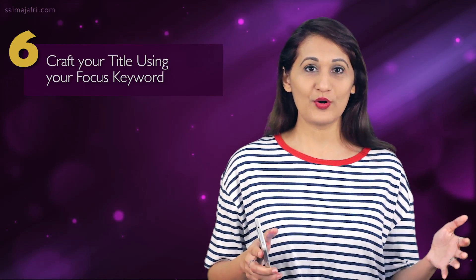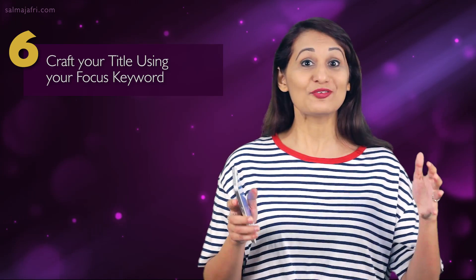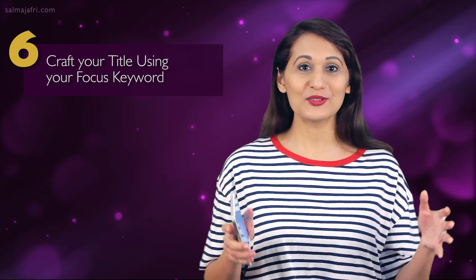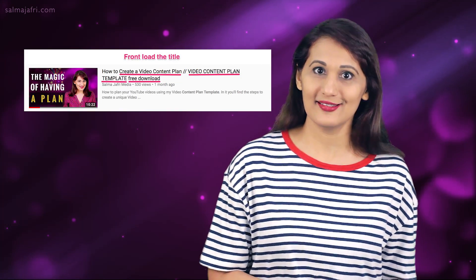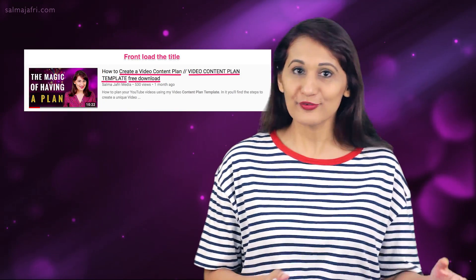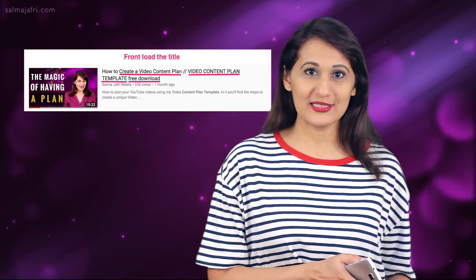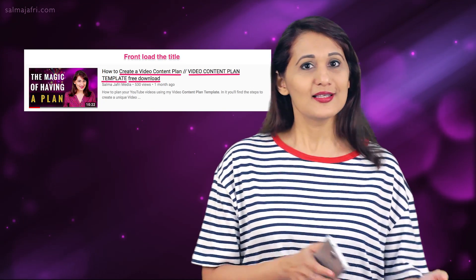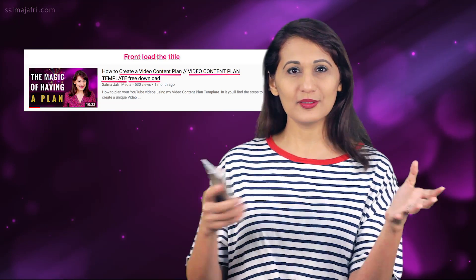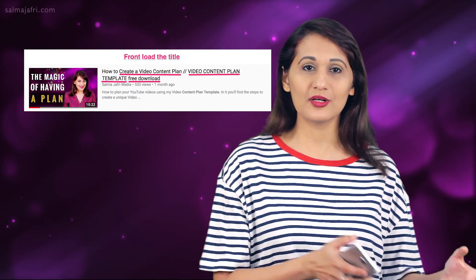Step six is to craft your title. You have your keyword — the first thing you want to do is front-load that keyword into the title. By front-load, I mean as much as possible the first couple of phrases in your title should be your focus keyword. Then you want a nice, compelling title, so front-load your keyword and for the rest of the title include an emotional hook.